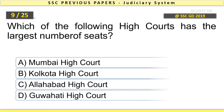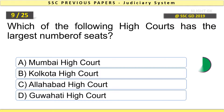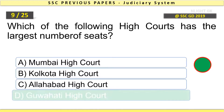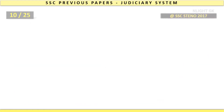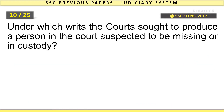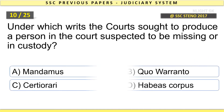Which of the following High Courts has the largest number of seats? Answer: Guwahati High Court. Under which writ do the courts seek to produce a person in the court suspected to be missing or in custody?